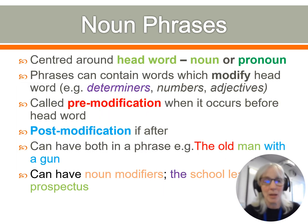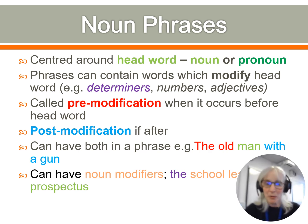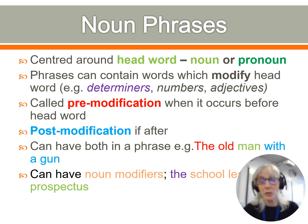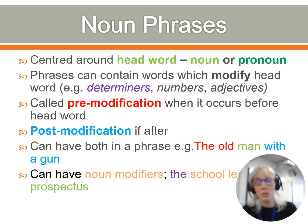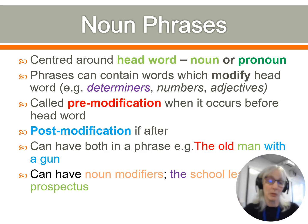Noun phrases centre around a head word, which can be a noun or a pronoun. Phrases can contain words which modify the head word — determiners, numbers, adjectives. When modification occurs before the head word it's called pre-modification; when it occurs after the head word it's called post-modification, and you can have both. For example, 'the old man with a gun': 'old' pre-modifies 'man' and 'with a gun' post-modifies it. Post-modification very commonly starts with a preposition. You can also have noun modifiers — not every word in front of a noun is an adjective: in 'the school leavers' prospectus,' the noun 'school leavers' is modifying 'prospectus.'